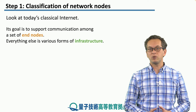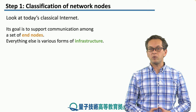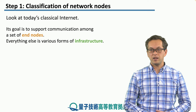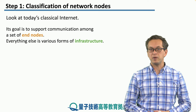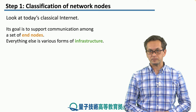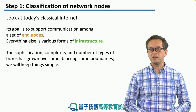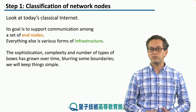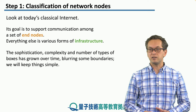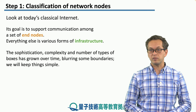The goal of the classical internet is to support communication among a set of end nodes. There's a whole bunch of infrastructure nodes in between that make this communication possible. The sophistication, complexity, and the sheer number of types of boxes has grown over time, and sometimes the boundaries between their functionalities and definitions become blurred. So we will keep things simple for now.